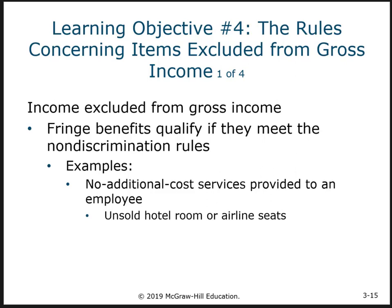The first one is fringe benefits — things on top of your regular salary that employers provide for their employees. Most of them have to follow non-discrimination rules, meaning you can't provide them for just certain employees. You can't provide them only for top-level employees; they have to be for basically all employees. The tax law provides this opportunity to give benefits to employees that are not taxable, but only if the company provides them for everybody.